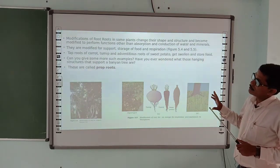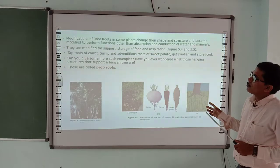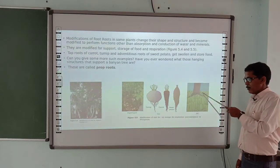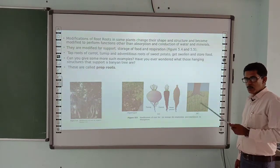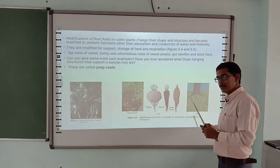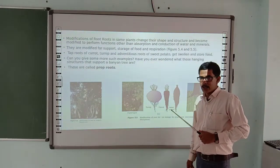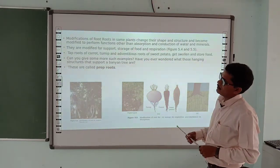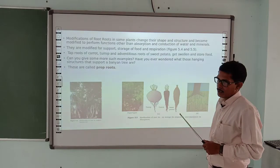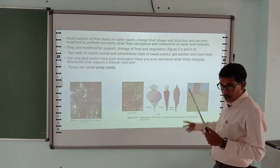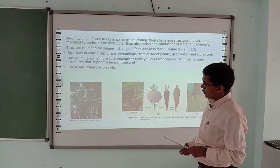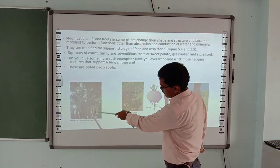Modified roots serve different purposes: some are for support, some for food storage, and some for respiration — such as in mangrove plants, where roots come out of the ground to help with respiration. Sweet potato, carrot, and turnip are examples of root modifications. Hanging roots called prop roots provide support for large trees like the banyan tree.